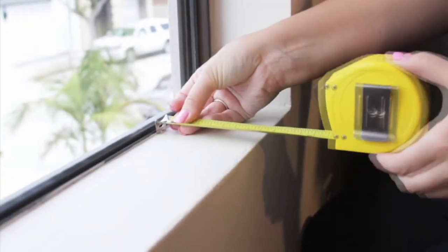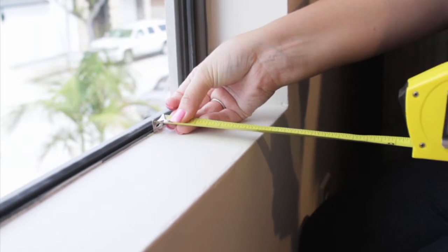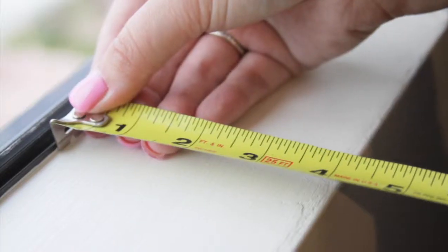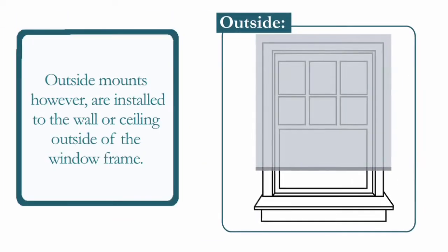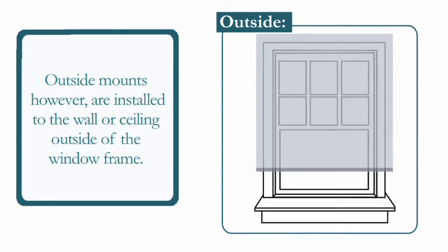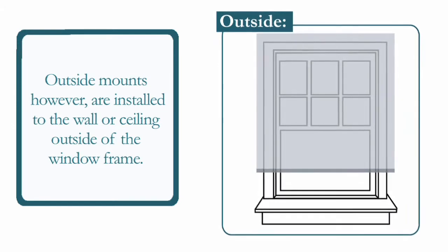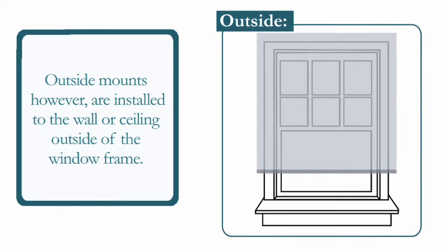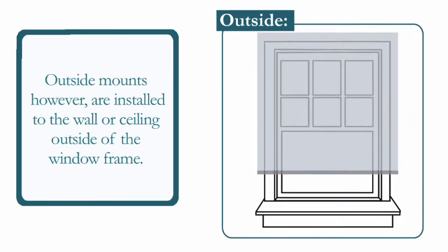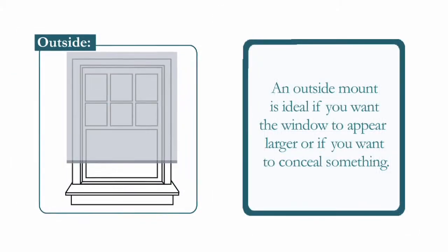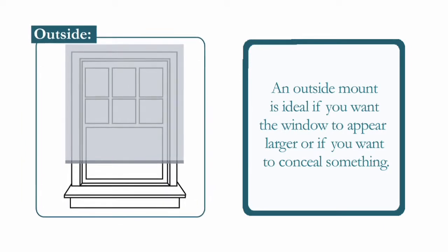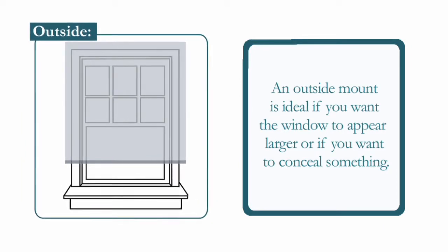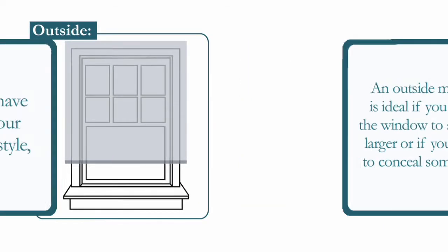Also, consider the depth of your window frame if you prefer a flush look. Outside mounts, however, are installed to the wall or ceiling outside of the window frame. An outside mount is ideal if you want the window to appear larger or if you want to conceal something.